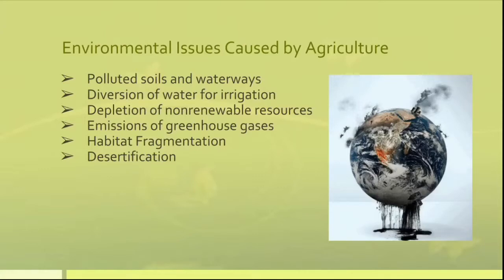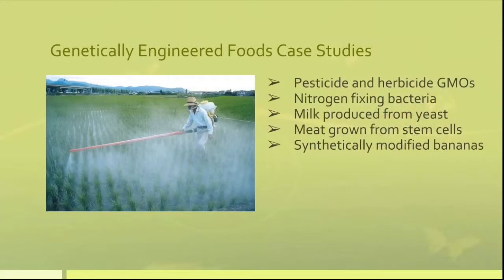As humankind's demand for food, fuel, land, and water has surpassed the earth's capacity to sustain this demand and replenish these resources, biotechnological advancements serve to negate the depletion and restore the land. Synthetic biology can mitigate these problems and deliver more nutritious crops that thrive with less water, land, energy, and fewer chemical inputs in more variable climates and on lands that otherwise would not support intensive farming.